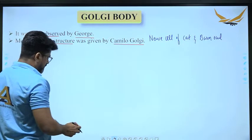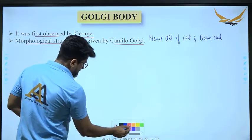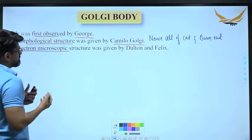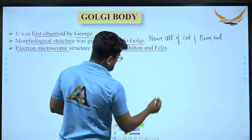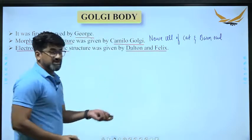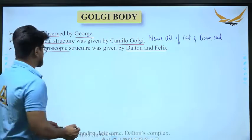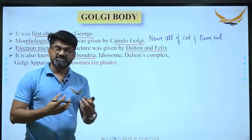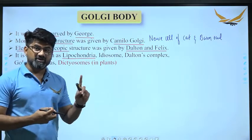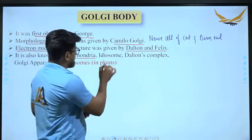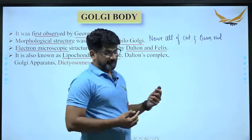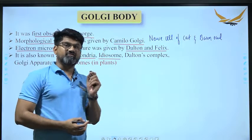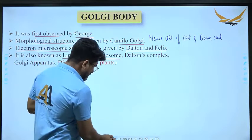The electron microscopic structure of Golgi body was given by Dalton and Phelix, and that is why Golgi body is also known as Dalton complex. It is also known as lipochondria because it is related to the synthesis of lipids. It is also known as idiosome.